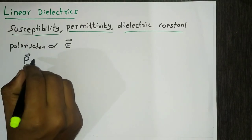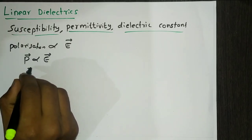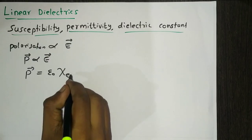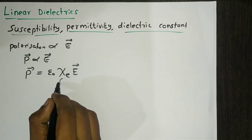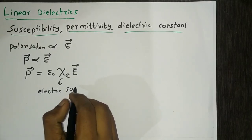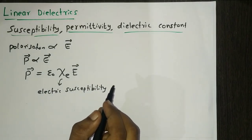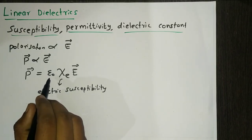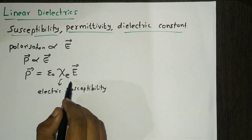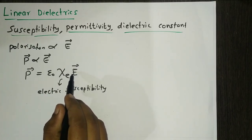The polarization P is proportional to E. Replacing the proportionality, we write P = ε₀ χ_E E, where χ_E is a new quantity called electric susceptibility. The ε₀ is introduced here to make χ_E dimensionless.